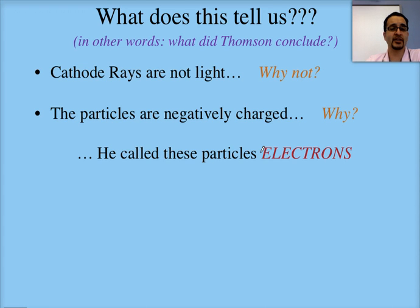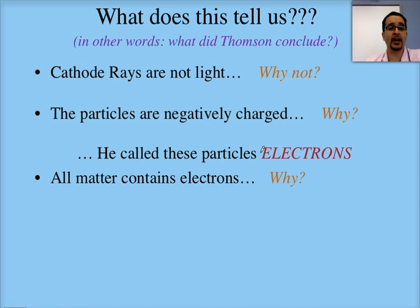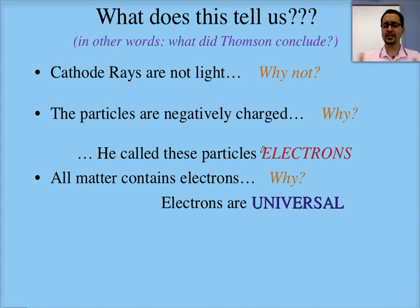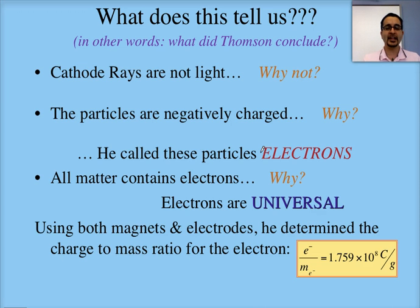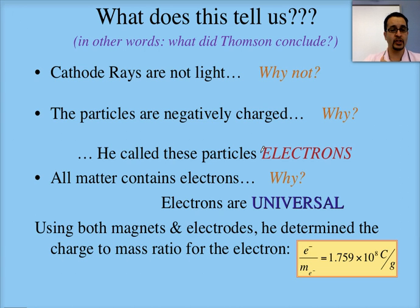He called these negatively charged particles electrons. He wasn't the first person to come up with the name, but that's the name that was given to them. He also said that all matter contains electrons, and that these electrons were universal — that they had the same properties. By manipulating the electric plates and magnets, he was able to calculate what is called the charge-to-mass ratio for the electron. You do not need to memorize this number, but the key is that it was always the same value, no matter what. This was later used by another scientist to find out the actual charge and mass of the electron.